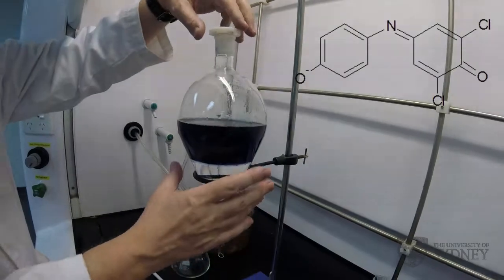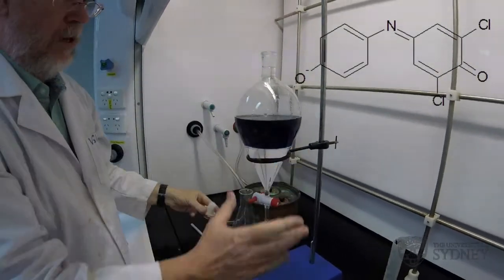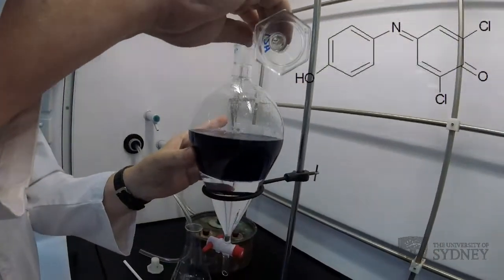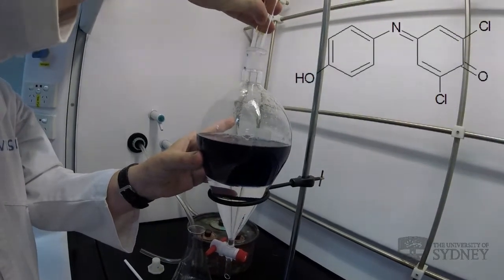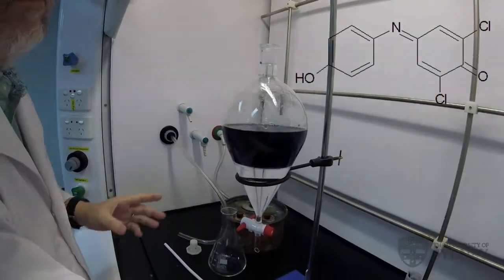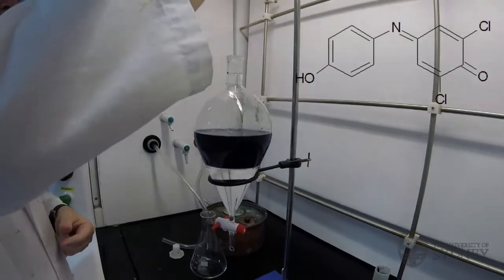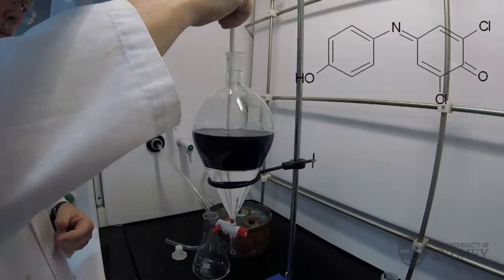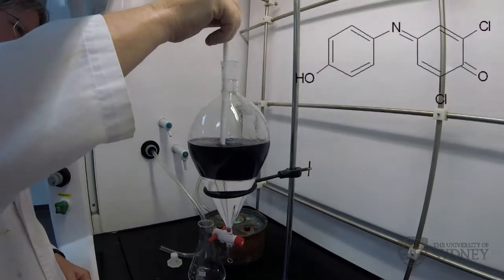Let's protonate it. So I'm going to add a small amount of HCl, which will protonate the indicator and cause it to change color into its acidic form.